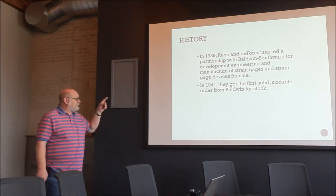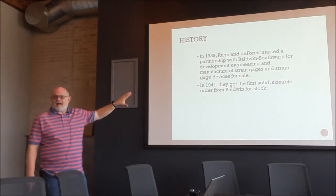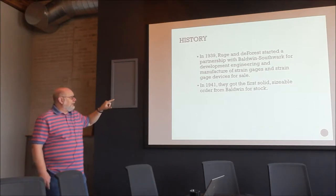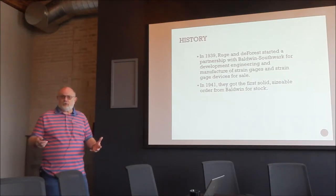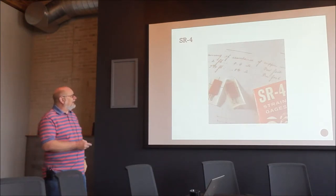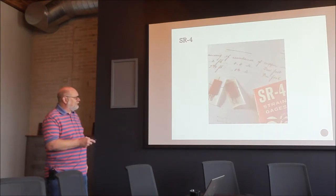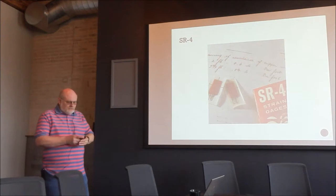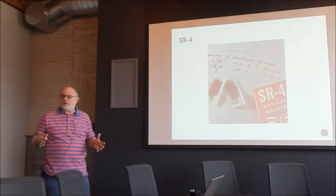In 1939 they started their partnership with Baldwin Southworth — railroad engine manufacturers — and developed the strain gauge for sale. In 1941 they got their first sizable order from Baldwin, who was still making boiler-fired steam engines. The original gauges had a small felt backing to help press them down while gluing, because Duco cement takes much longer than super glue to set.